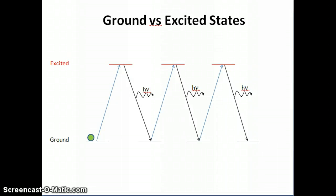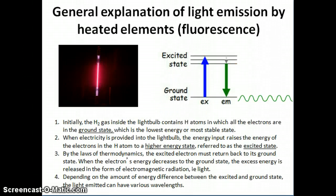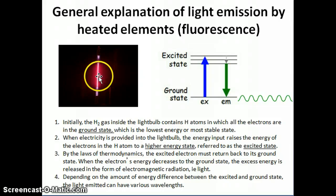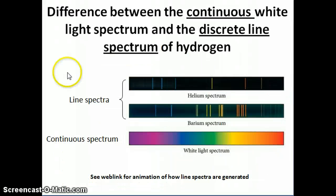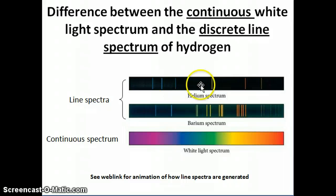Hi everyone. I want to continue talking about this idea of the atomic emission spectrum and how it relates to the structure of the atom. So far we've only talked about the atomic emission spectrum and the fact that if you have an element and it's heated, it usually emits light of a certain color. That light could then be split apart into component light waves, and for an element it would look like lines, whereas for white light it would look like a continuous spectrum.